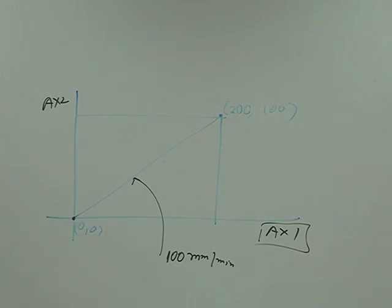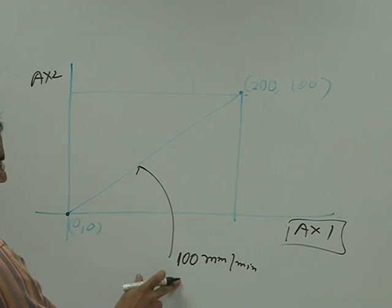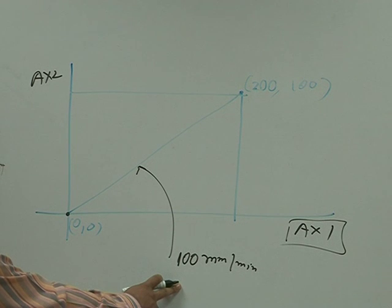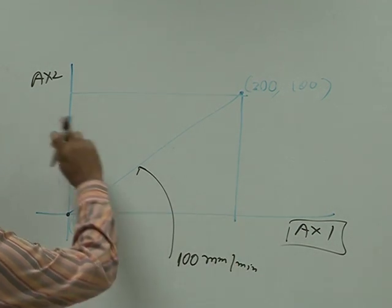What will be the speed of axis 1 and axis 2? Object speed is 100mm per minute, we have to find out speed of axis 1, speed of axis 2.